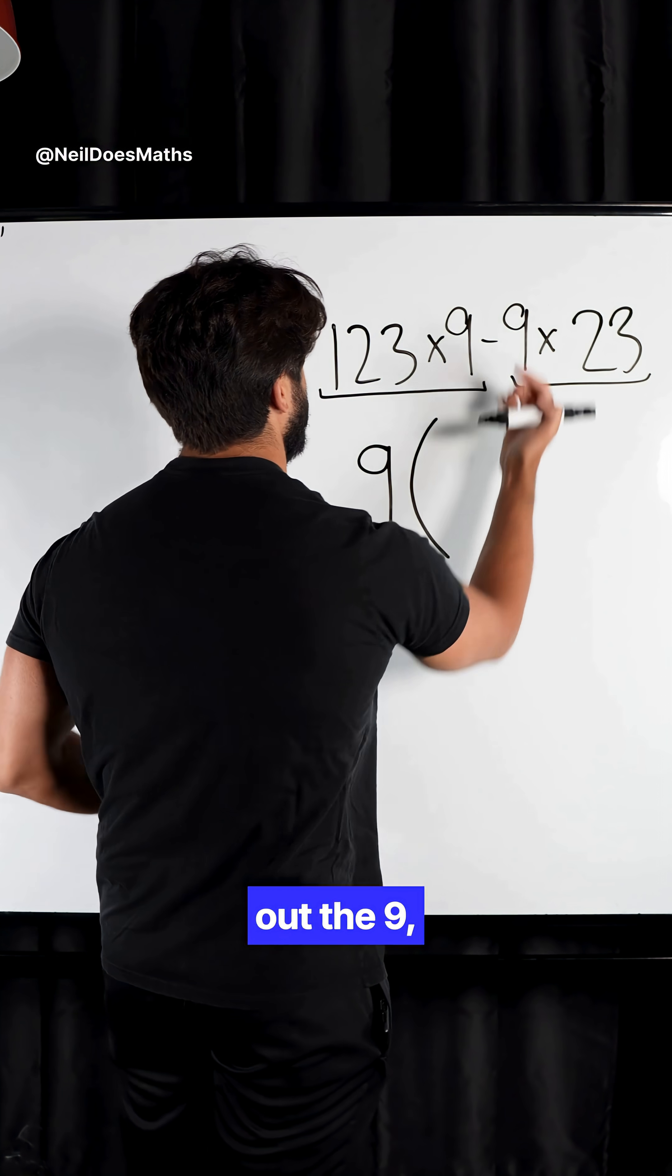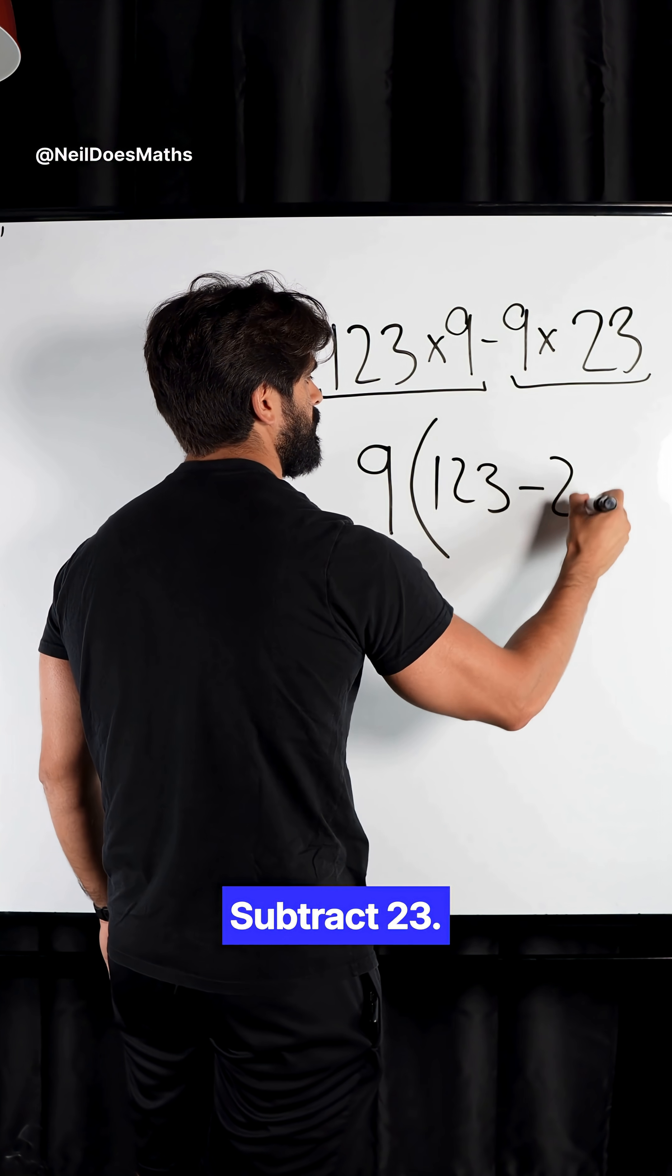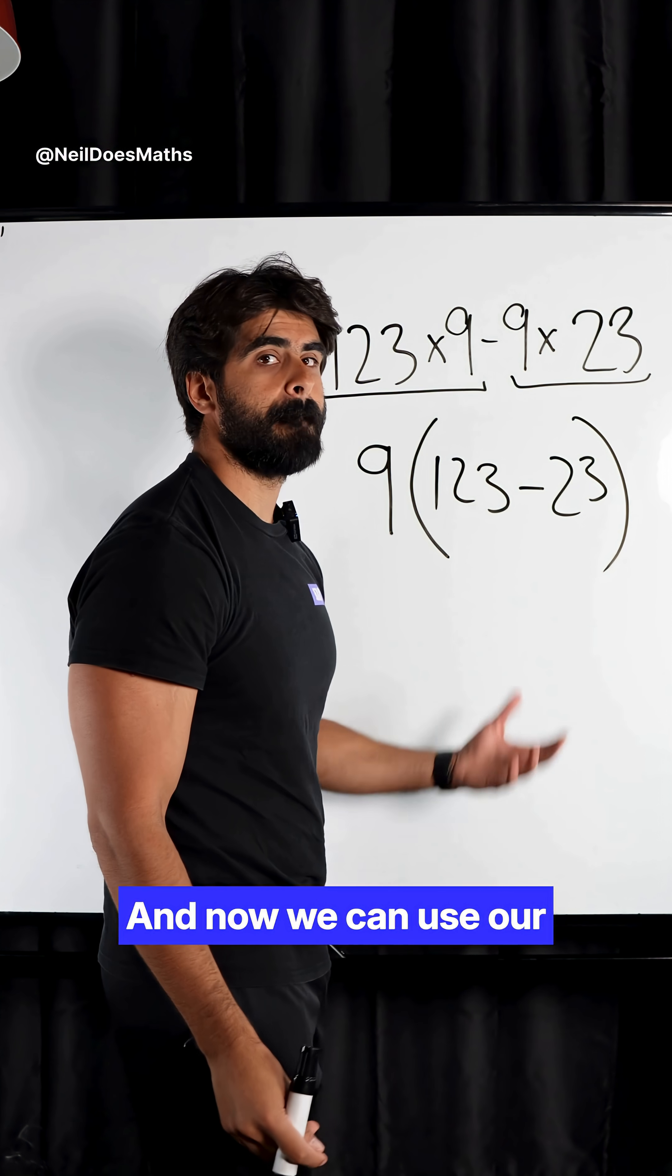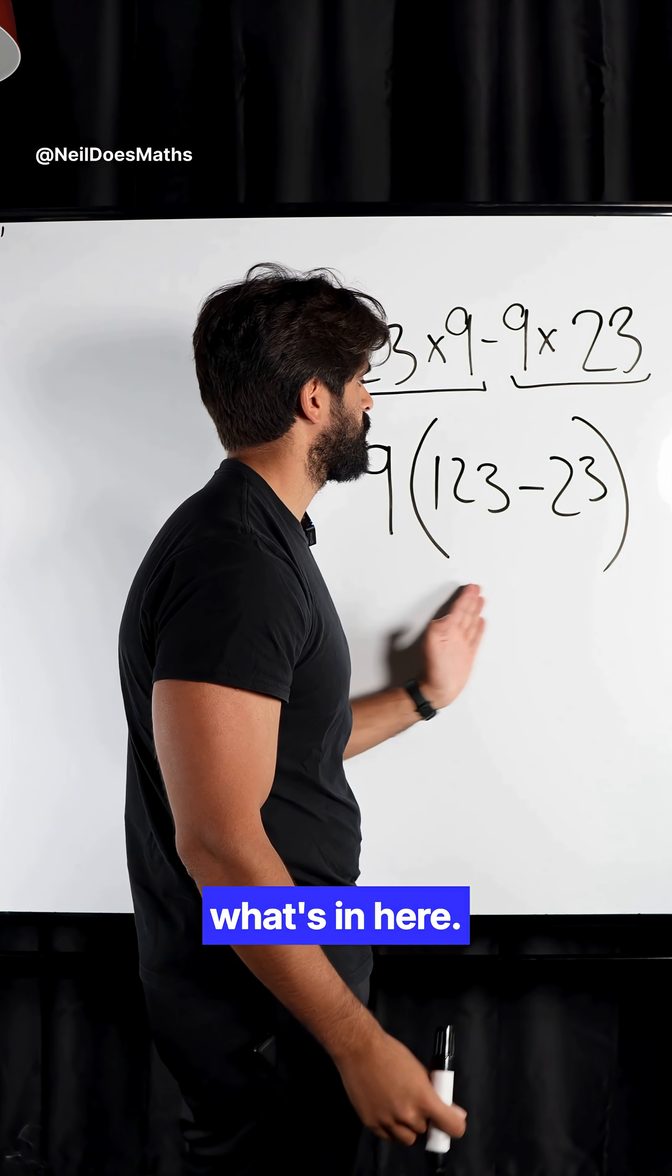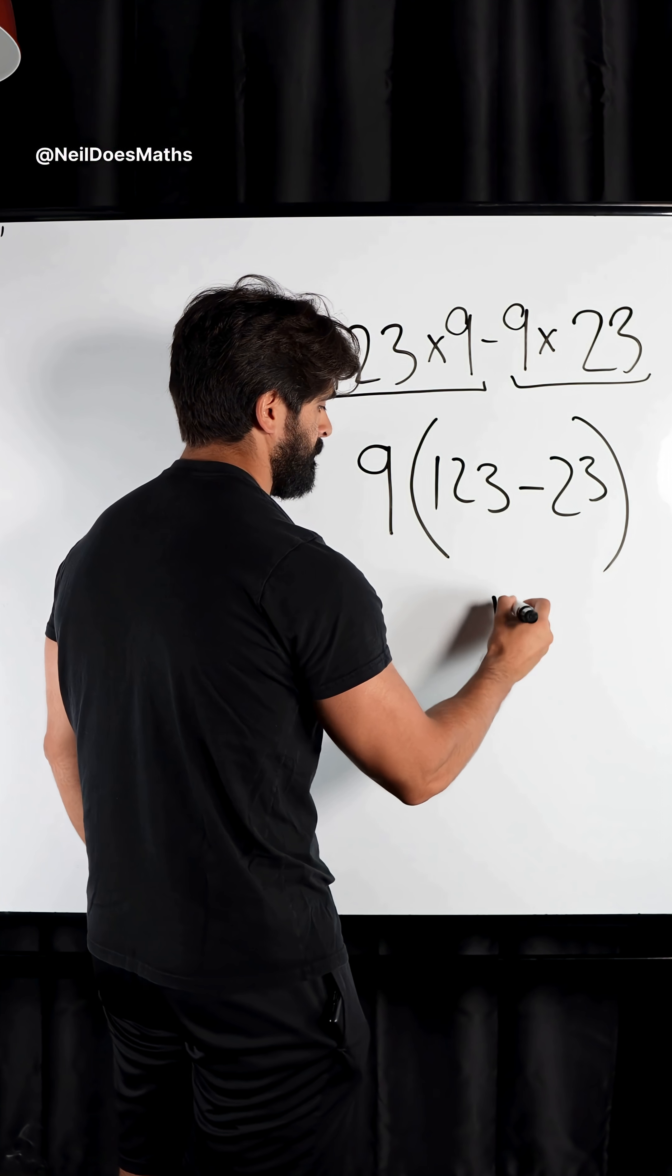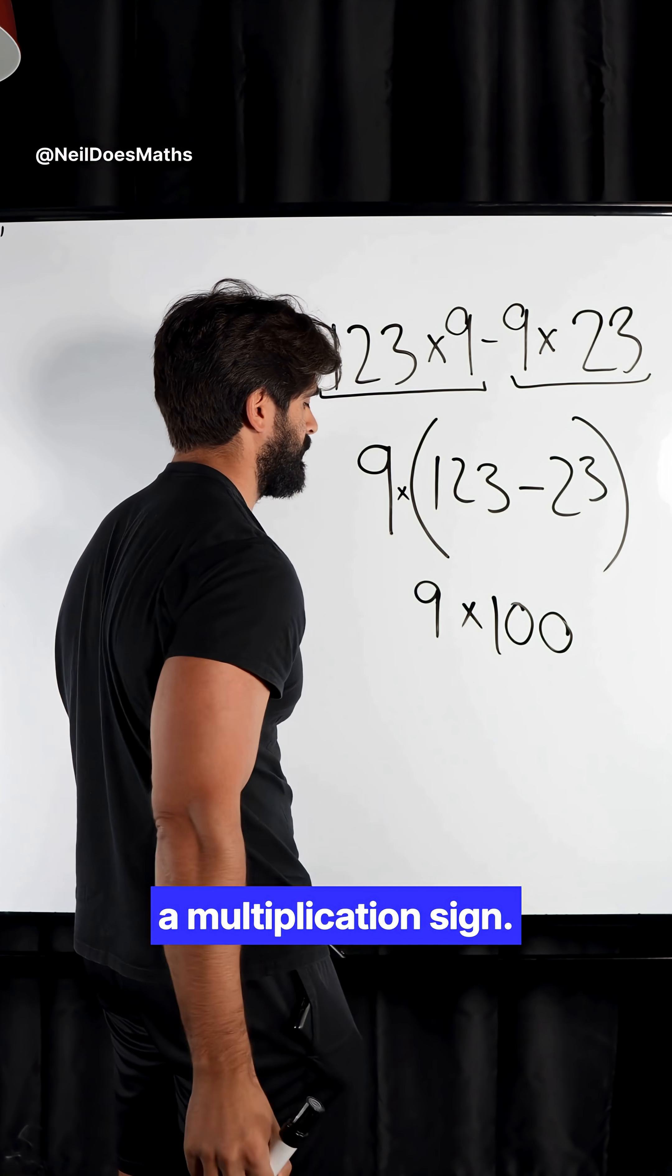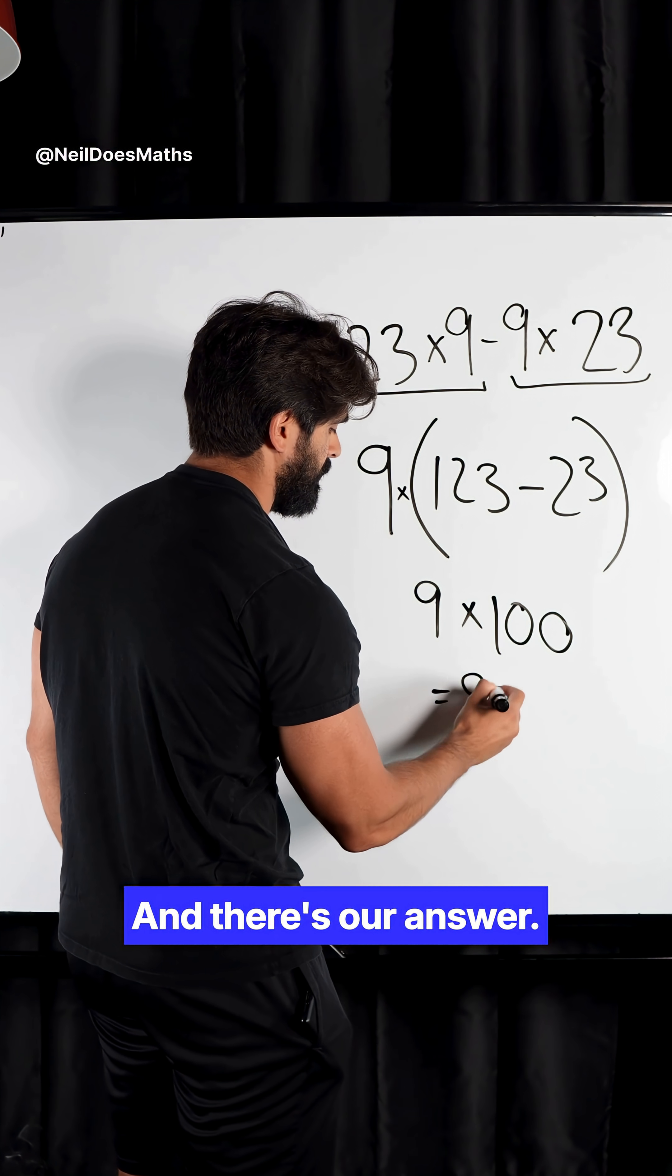If I factorize out the 9, I'm left with 123 subtract 23. And now we can use our BIMSA again and address what's in here. 123 take away 23 is 100 times by 9 because between a bracket and a number is a multiplication sign. And there's our answer, 900.